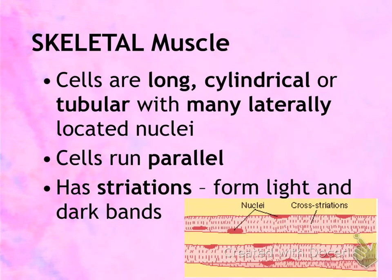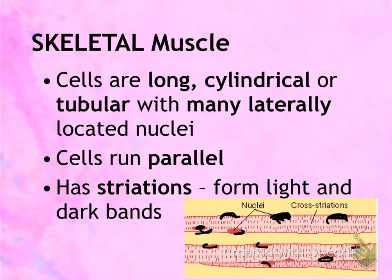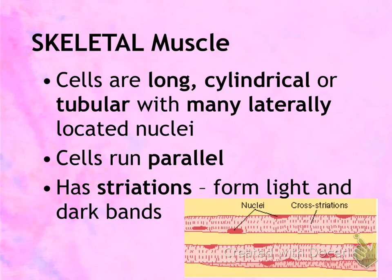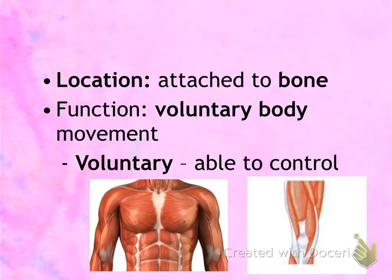There are three types of muscle tissue. The first is skeletal muscle. The muscle cells in skeletal muscles are long and cylindrical or tube-shaped, and they have many laterally located nuclei. Notice that the nuclei are all near the cell membrane on the outside, and sometimes the nuclei will actually bulge out of the muscle cell. The cells run parallel to one another, lying side by side. They also have striations, which are stripes.